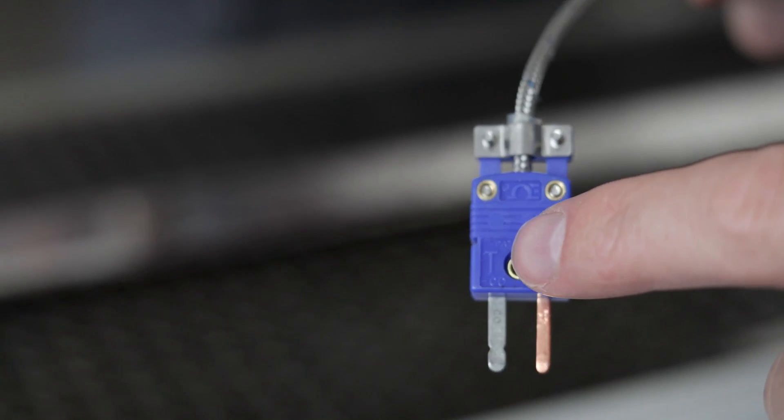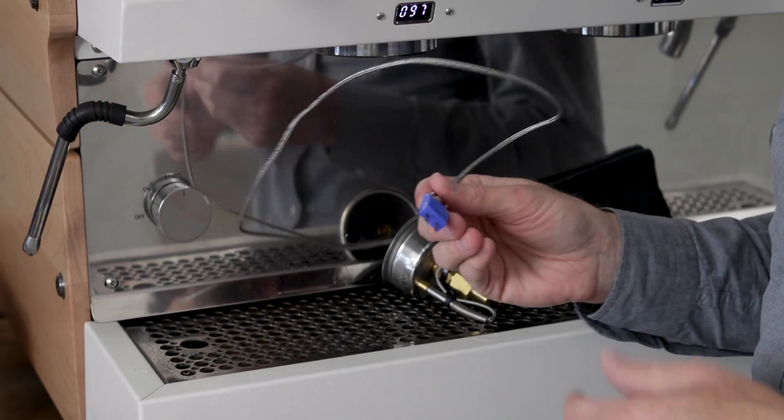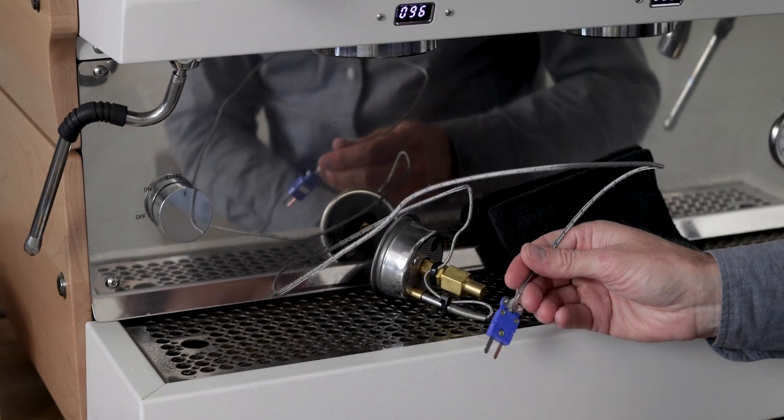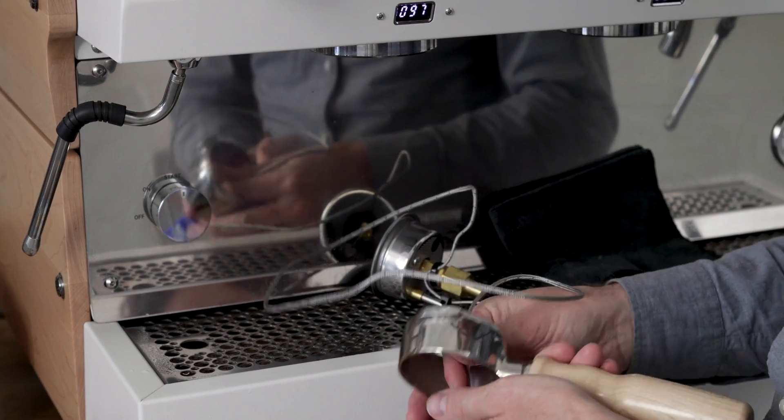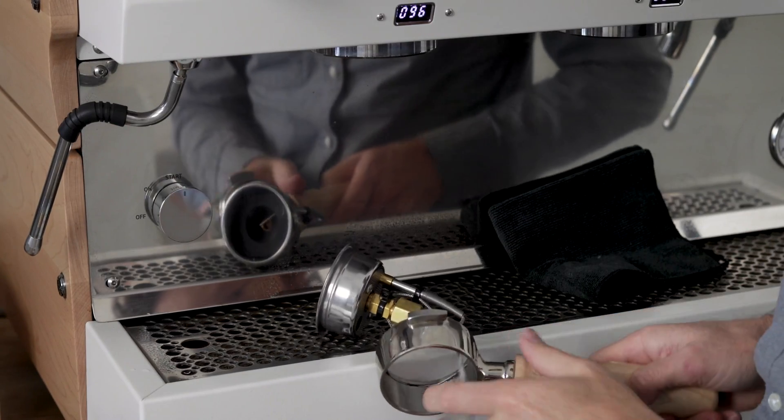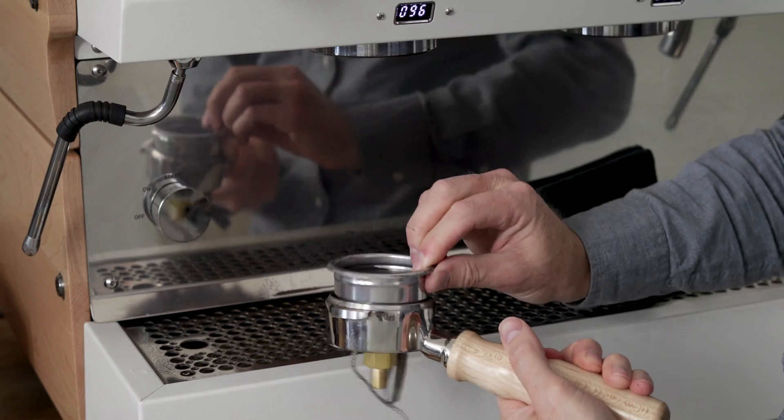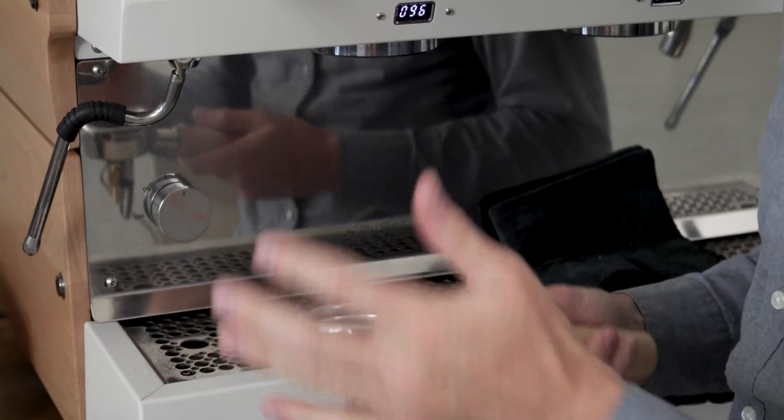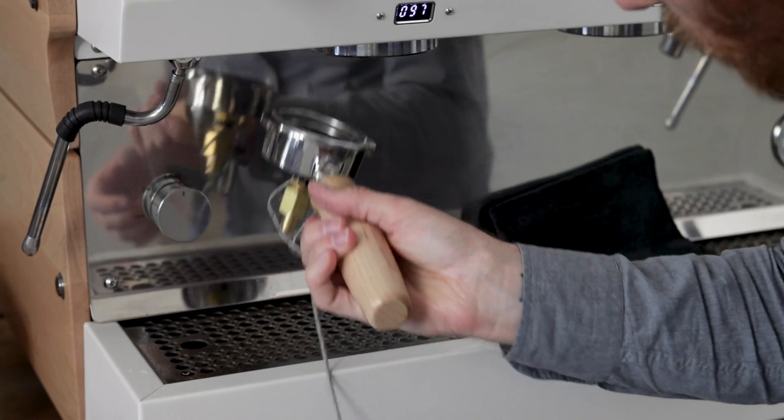So you take this, you can see on here it reads type T. You're going to need a digital thermometer that accepts type T, not all of them do, so make sure you get the one that does. You can thread your wire through the bottomless portafilter, drop your basket in, and put it in just like you would any other bottomless portafilter. Now we're in there and we can put it in our machine.